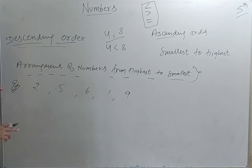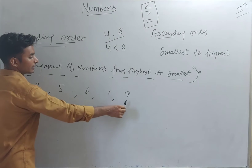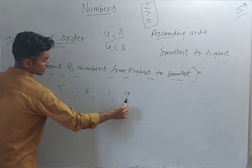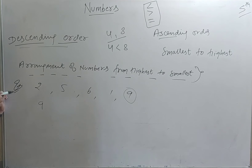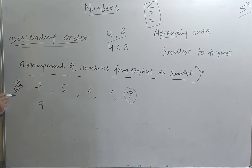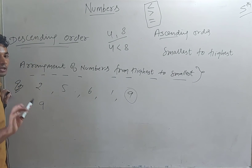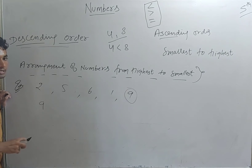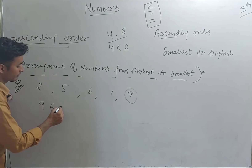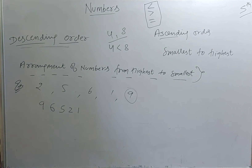Now we arrange all numbers 2, 5, 6, 1, and 9 from highest to smallest. First we find the highest number — obviously 9. So 9 takes the first position. Then the next smaller number closest to 9: between 9 and 1 there are numbers like 8, 7, 6 — so 6 comes next, then 5, then 2, then 1. So the descending order arrangement is: 9, 6, 5, 2, 1.